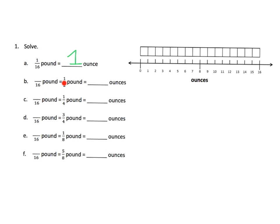If we wanted to take a half a pound, take a look — a half a pound means we're going to take that pound and chop it up into two equal sized pieces. We can see it's one, two, three, four, five, six, seven, eight. So there are eight ounces in a half a pound. That tells us that in a half a pound there are eight ounces, which is eight sixteenths of a pound. So a half a pound is equal to eight ounces.